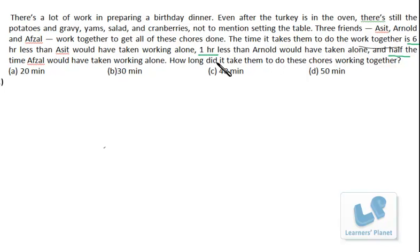Now suppose we assume that the total time which they are taking is x hours, right? Now, the first one is taking six hours less. The time it takes them to do the work together is six hours less than Asit would have taken. That means Asit would be taking x plus six hours if he is working alone.